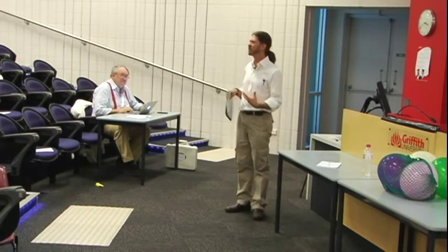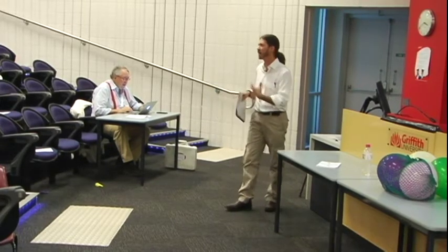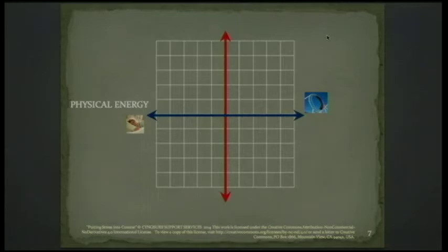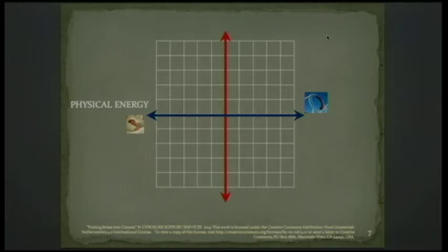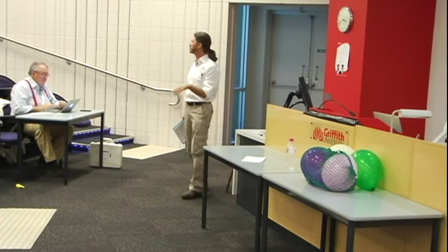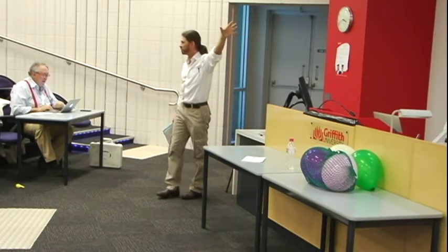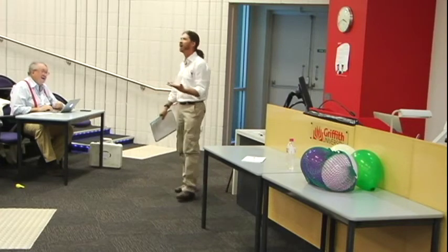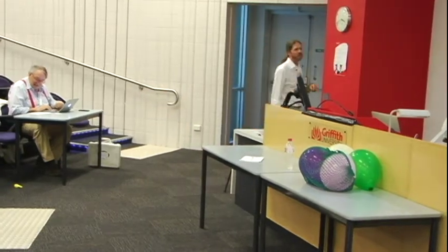Our functioning as human beings relies on a couple of different factors. I'm focusing particularly on our physical energy — the energy that allows us to get things done — and also our perspective. The physical energy runs along the horizontal axis. At one end you're asleep, you've got no energy. At the other end you are so buzzing with energy that you can't sit still. Most people shouldn't be at either extreme.